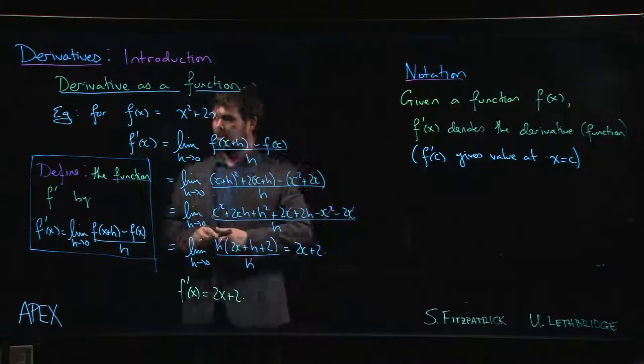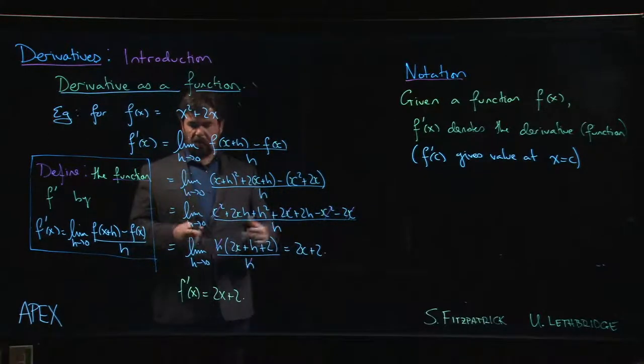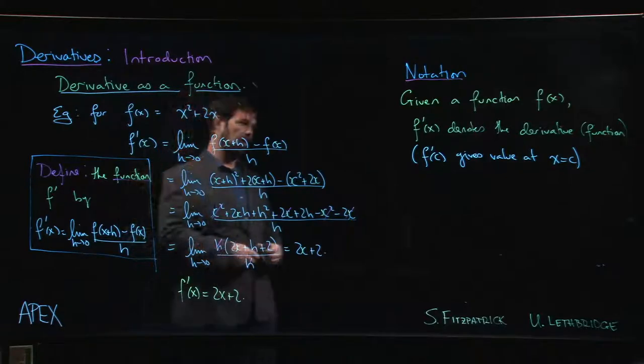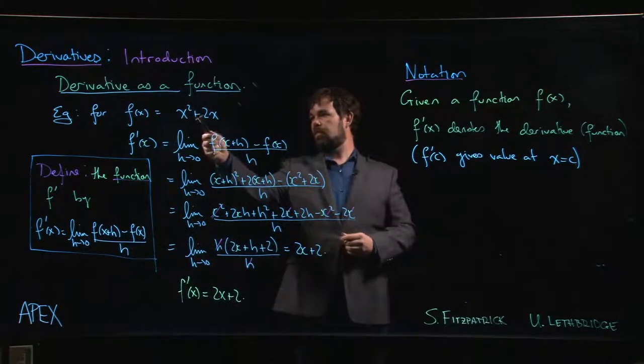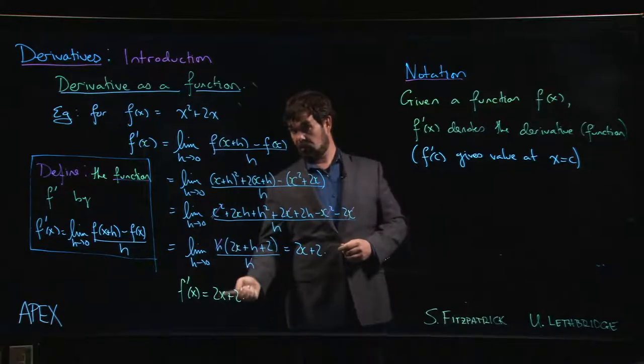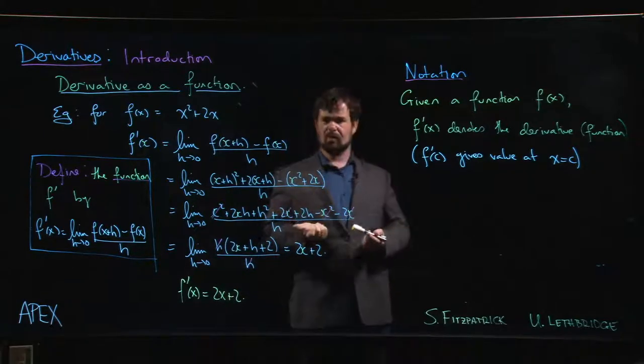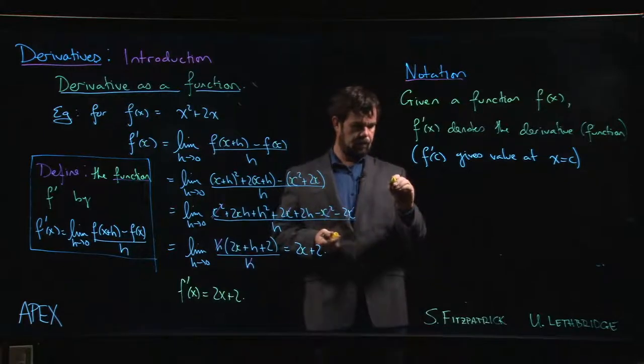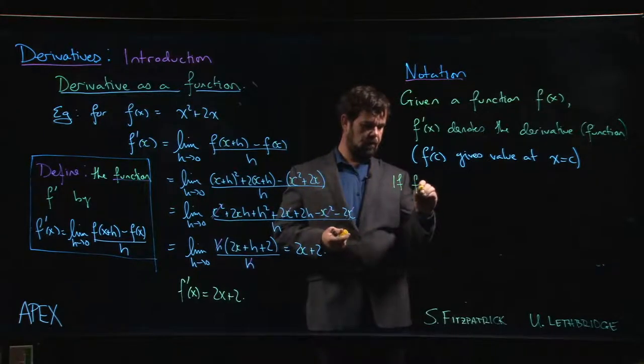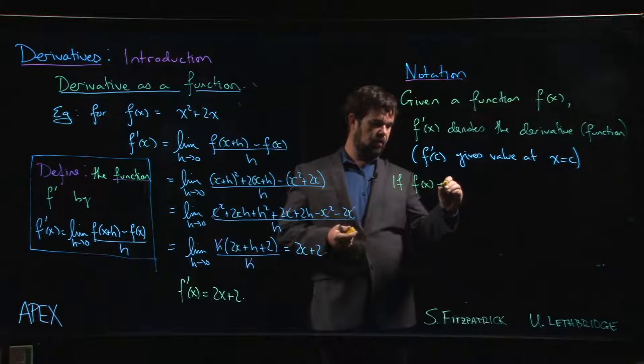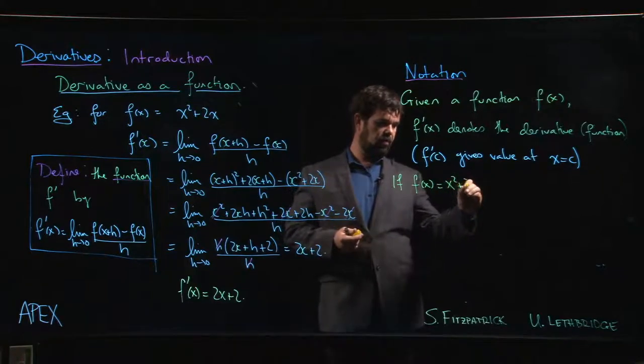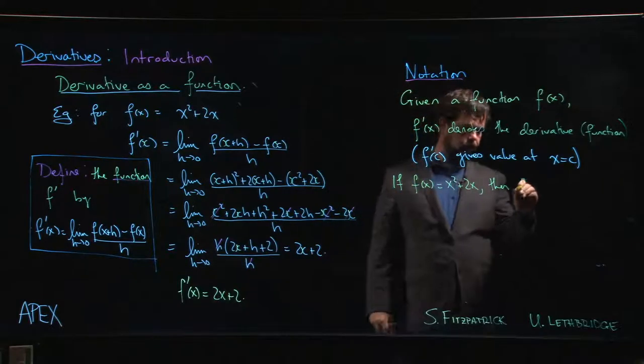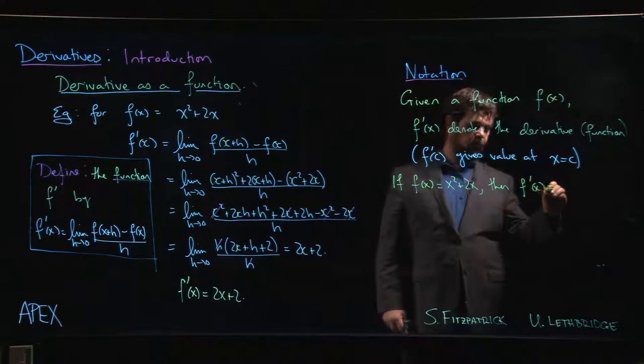For example, for this example that we did here, in order to tell you that the derivative of this function is given by this formula down here, I kind of have to write out a whole sentence. I have to say something like, if f of x equals x squared plus 2x, then f prime of x is 2x plus 2.